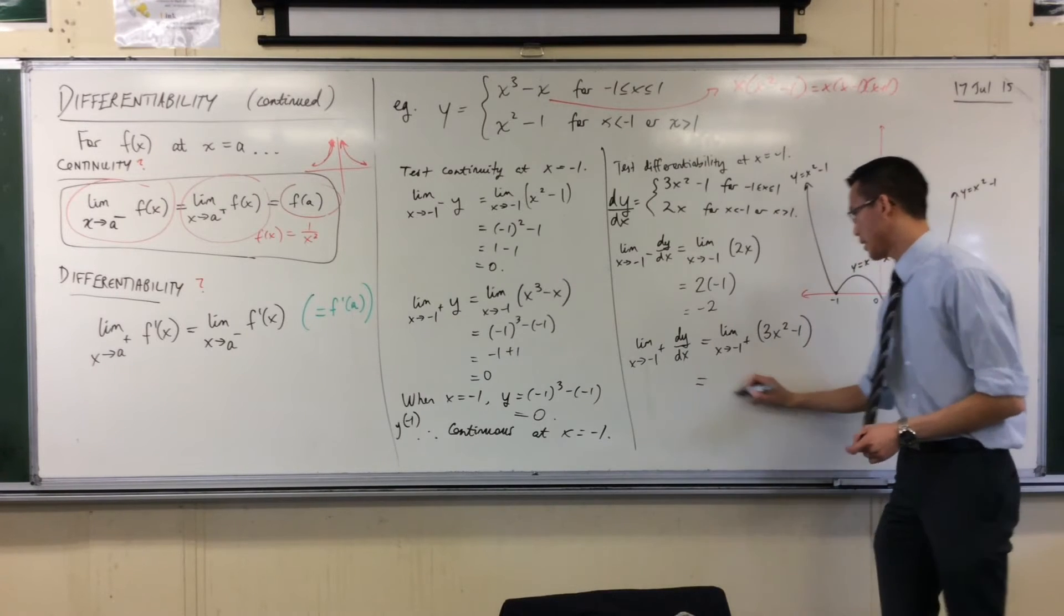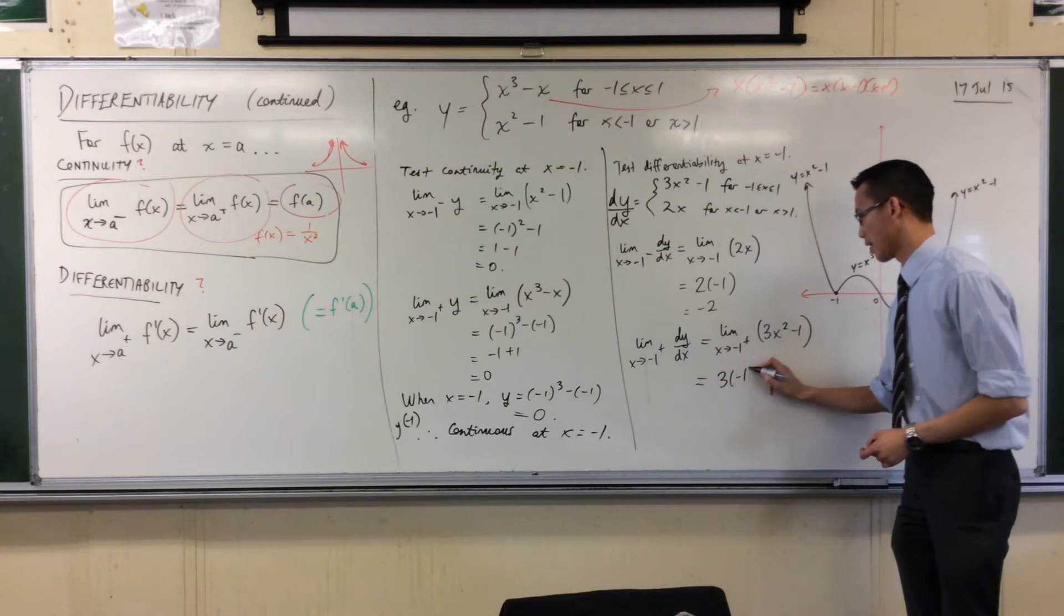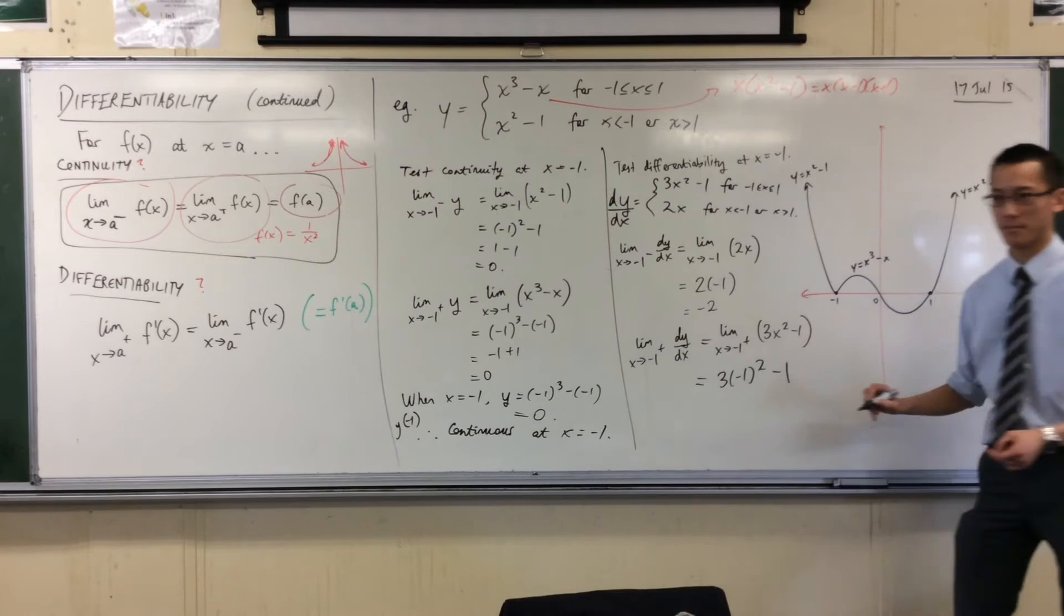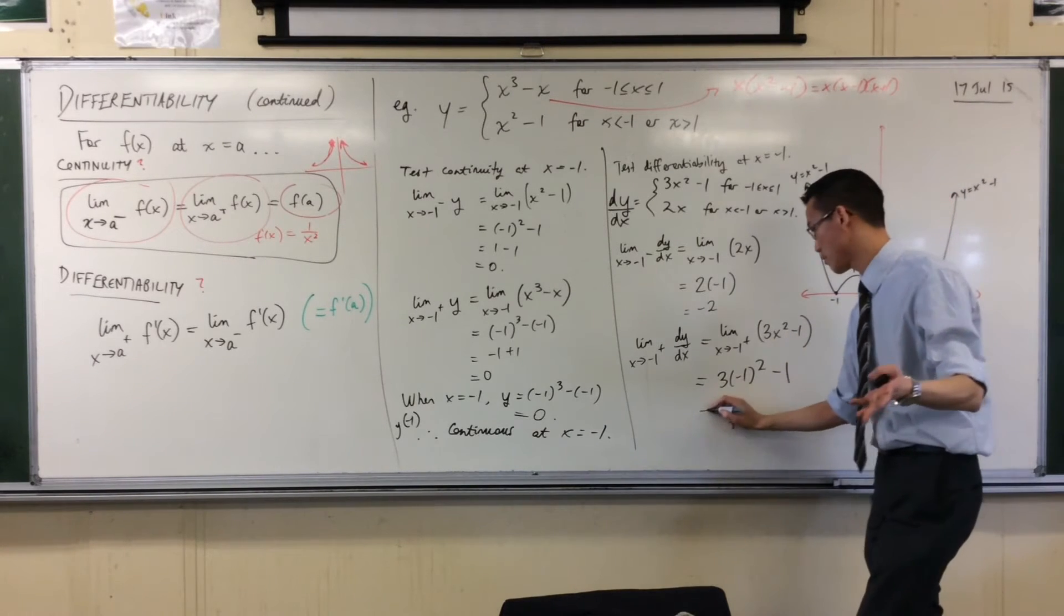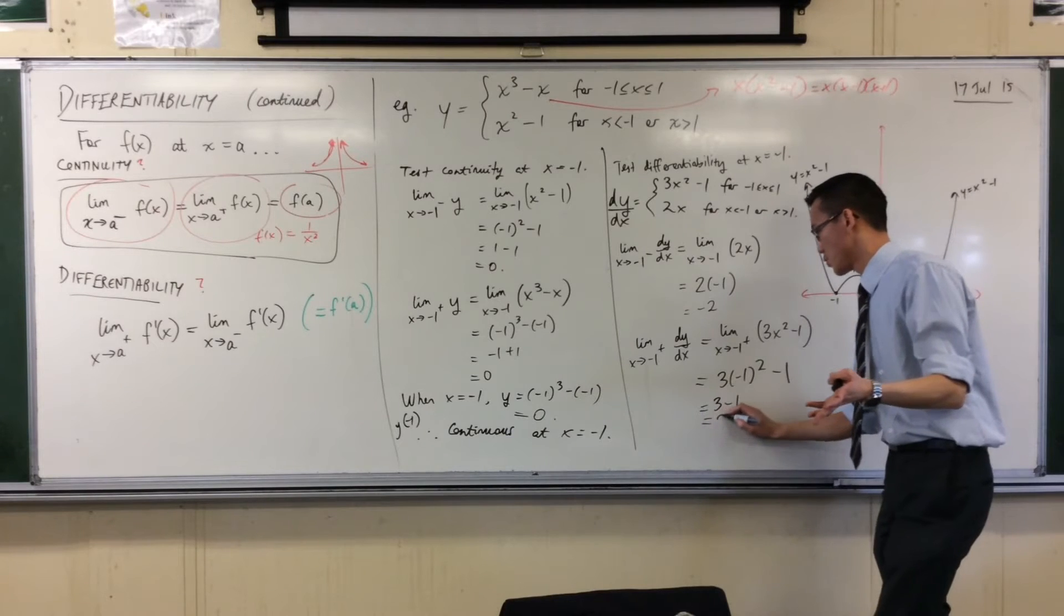So what am I getting here? 3, negative 1 squared. What happens to that negative 1 squared? It's just 1. So I'm getting 2.